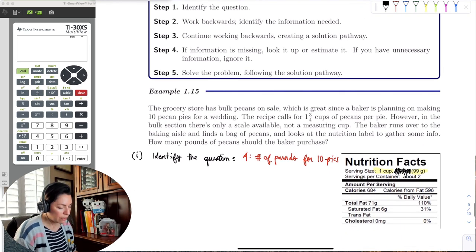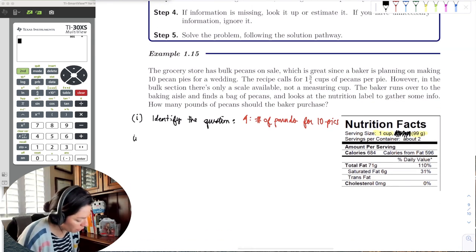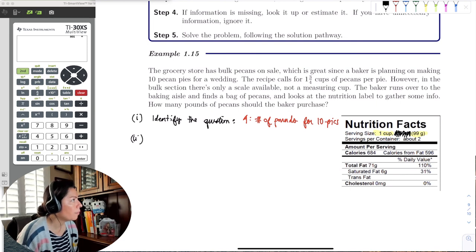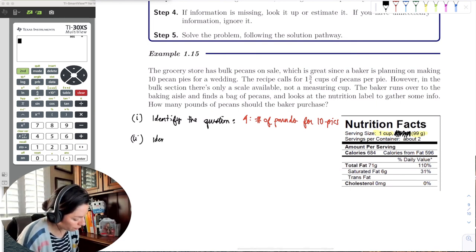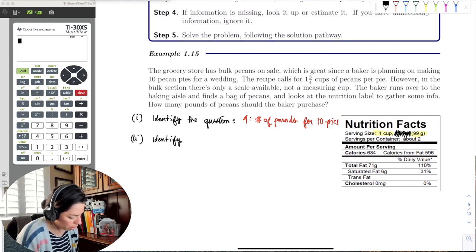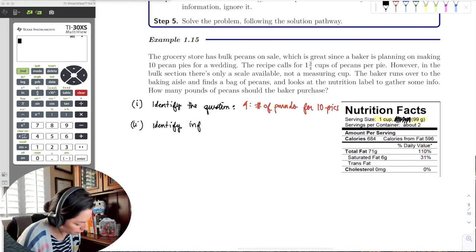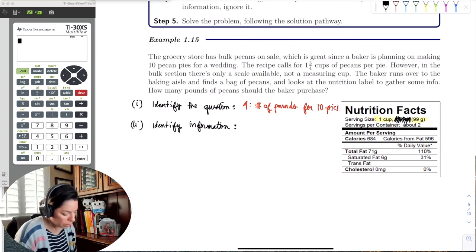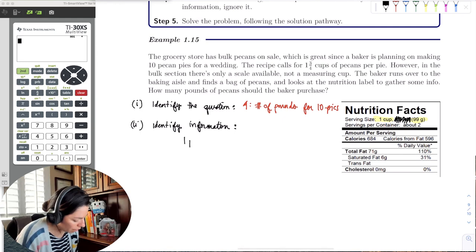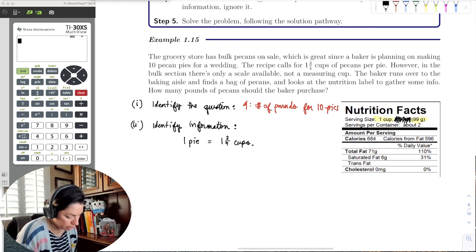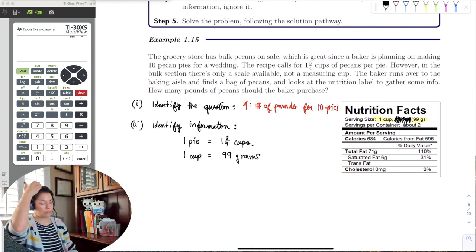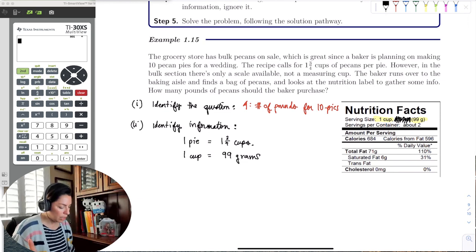So let's go ahead and write these things down. I think the first step should be identify the question. What are we trying to find? The goal is to find the number of pounds for 10 pies. The number of pounds of pecans for 10 pies.